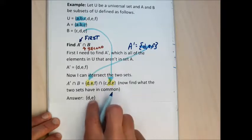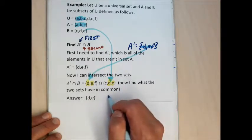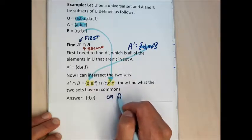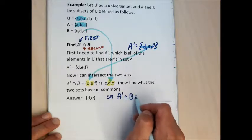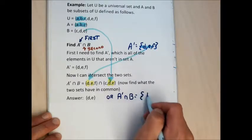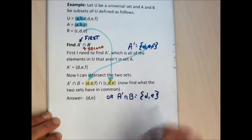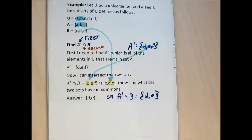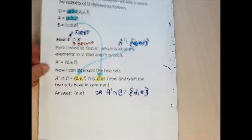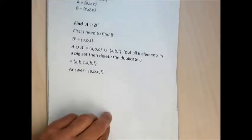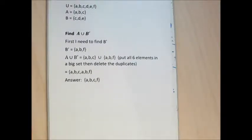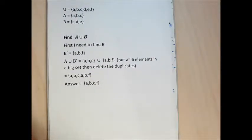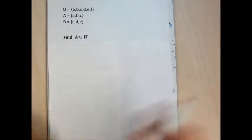This is completely fine as an answer. You could also write the full expression: A complement intersection B equals the set containing letters D and E. For these same three sets, with U = {A, B, C, D, E, F}, set A = {A, B, C}, and set B = {C, D, E}, I now want to find A union B complement.